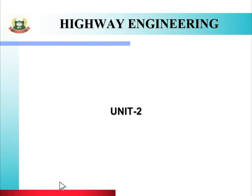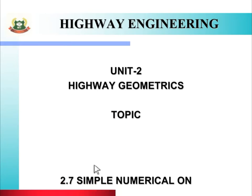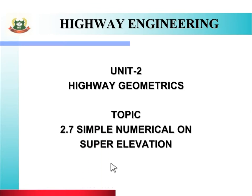In today's session, we will see Unit 2, that is Highway Geometrics. And today's topic is Simple Numerical on Super Elevation. To study this topic, we will go through the Learning Outcome, which includes Course Outcome, Program Outcome, and Unit Outcome.